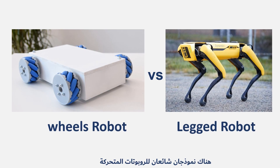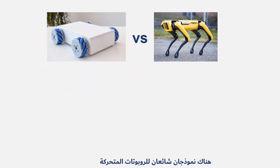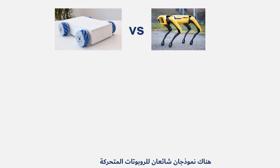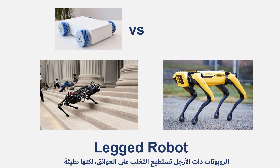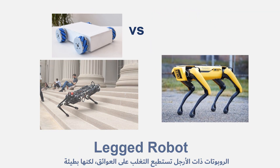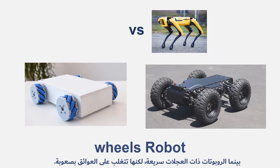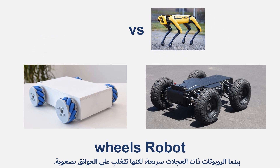There are two common models of moving robots. Robots with legs can overcome obstacles, but they are slow. While robots with wheels are fast, they overcome obstacles with difficulty.